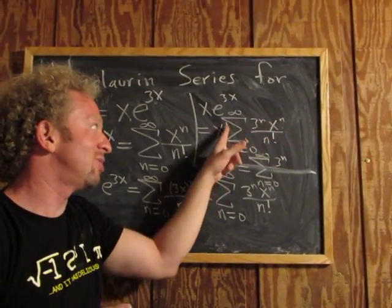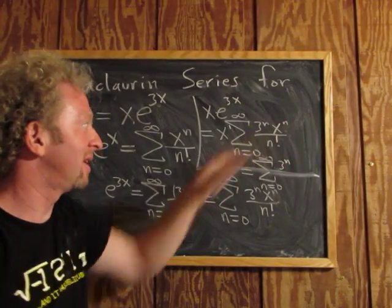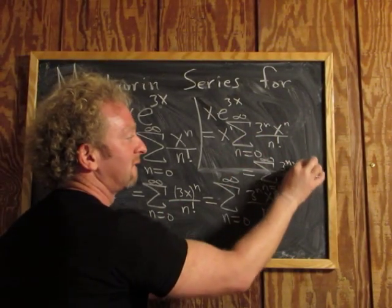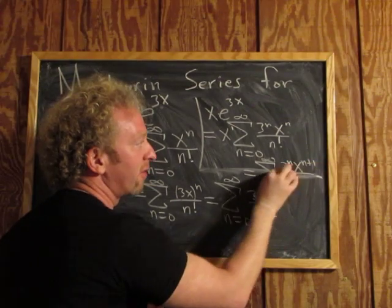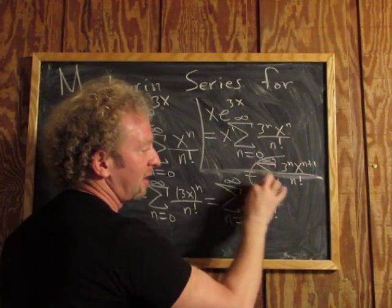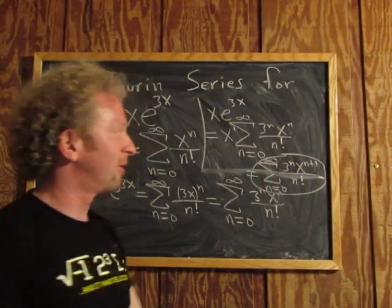Because when you multiply these, you add the exponents. So it'll be x to the n plus 1 over n factorial. And that is the final answer. Hope that made sense.